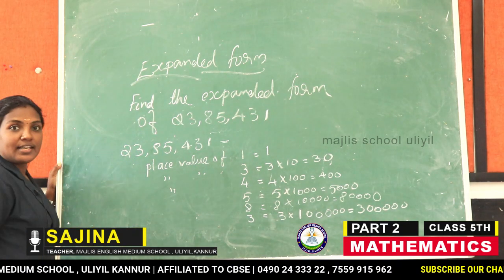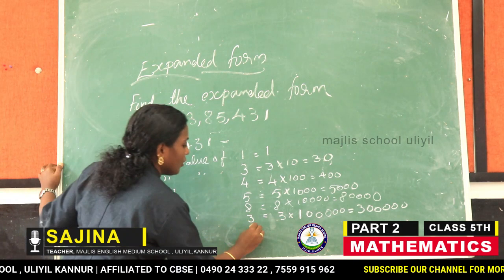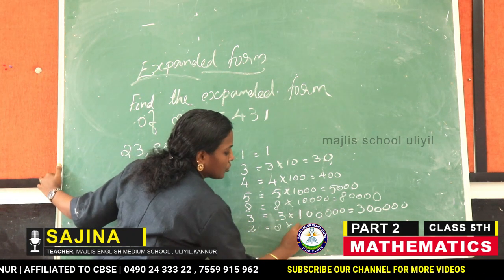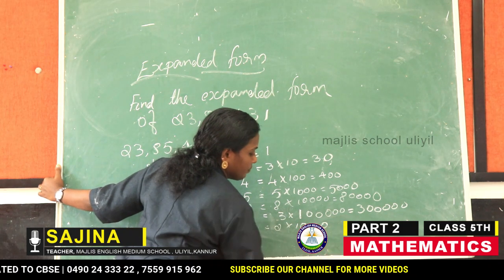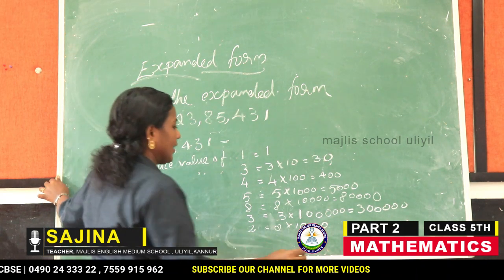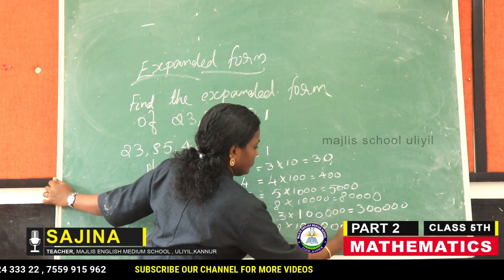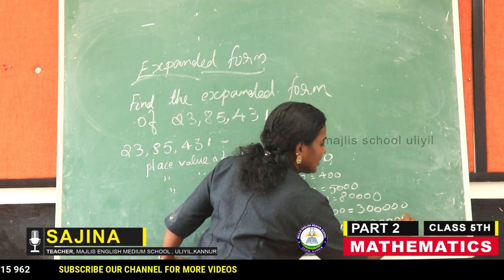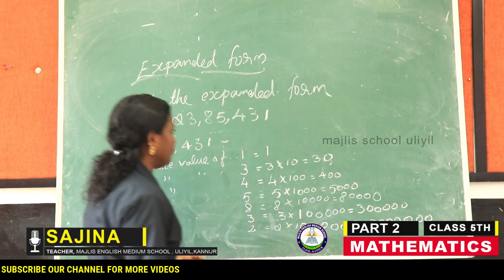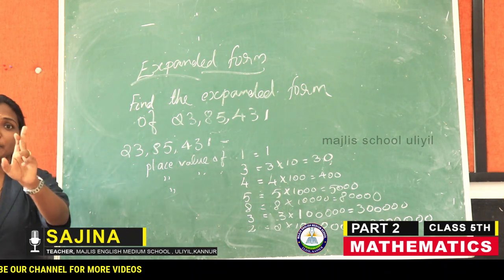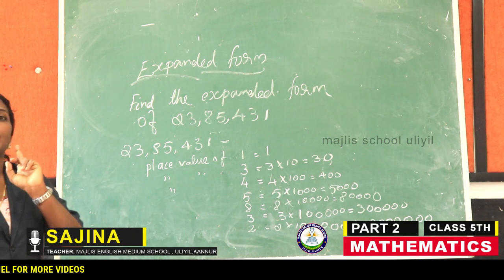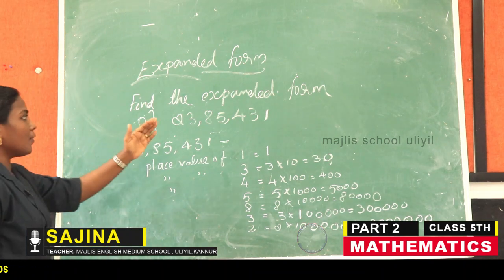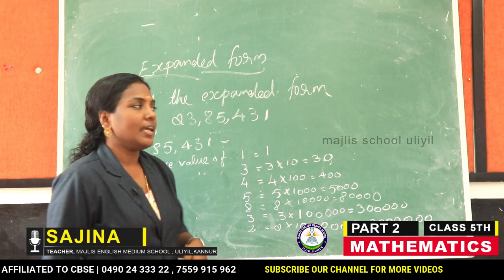And two is in ten lakh's place. Therefore, place value of two is equal to two into ten lakh, which is equal to twenty lakh. Therefore, expanded form of a number is the sum of the place values of the digits in a number.